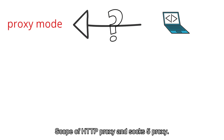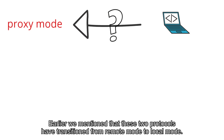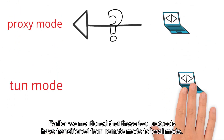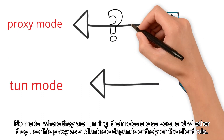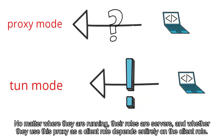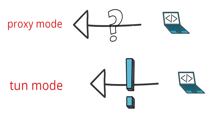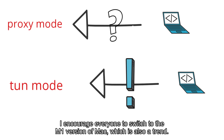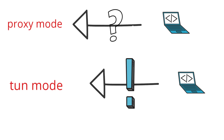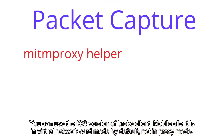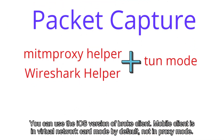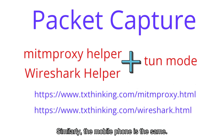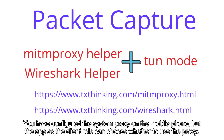Regarding the scope of HTTP proxy and SOCKS5 proxy: these two protocols have transitioned from remote mode to local mode. No matter where they are running, their roles are servers, and whether an application uses the proxy as a client depends entirely on the client's implementation. For example, if the system proxy is configured, Chrome will go through the proxy, but the terminal will not. On mobile, apps can choose whether or not to use the configured system proxy. The iOS brook client operates in virtual network card mode by default, not in proxy mode.